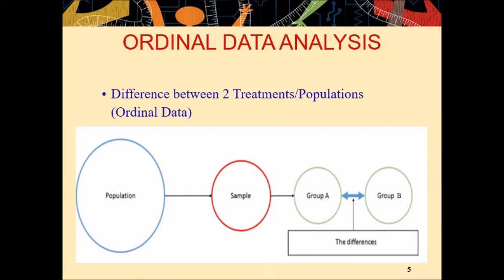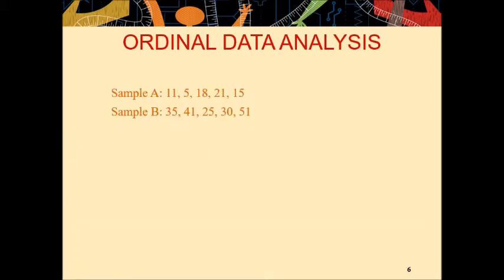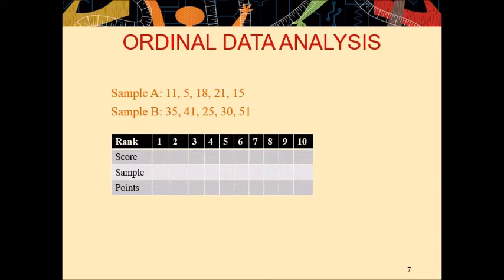Here is an example. For instance, we have two groups, sample A and sample B. Sample A consists of five individuals and sample B also consists of five individuals. These are the scores made by each individual. Sample A: 11, 5, 18, 21, 15, and sample B: 35, 41, 25, 30, and 51. Now you will make a table to conduct Mann-Whitney U-Test. First, you will write rank, then score, sample, and points. You know that your total number of individuals in both samples are 10. Therefore, you have to rank 10 individuals.